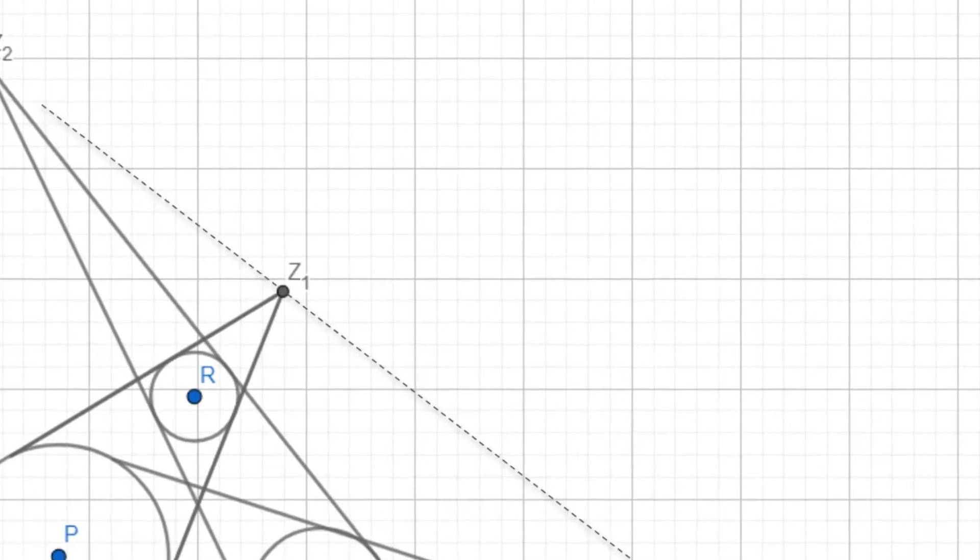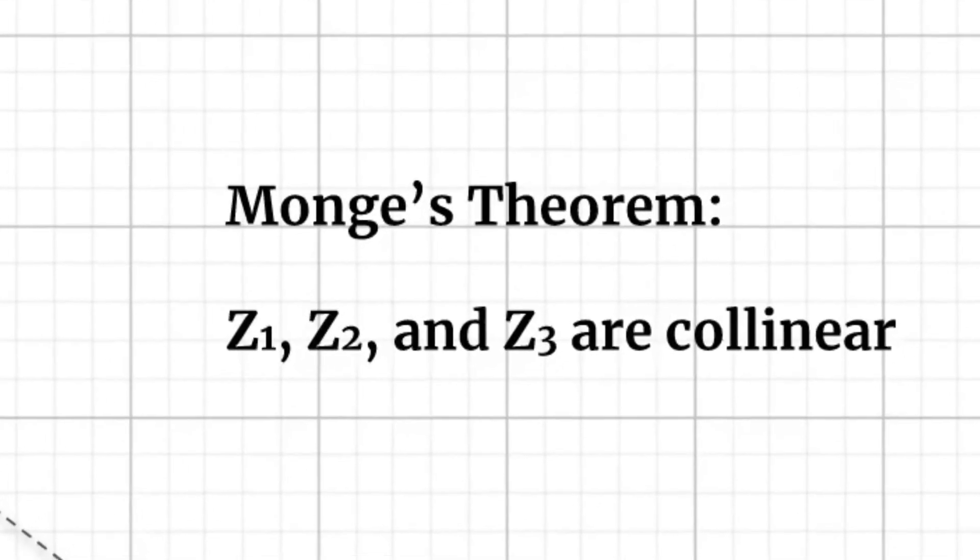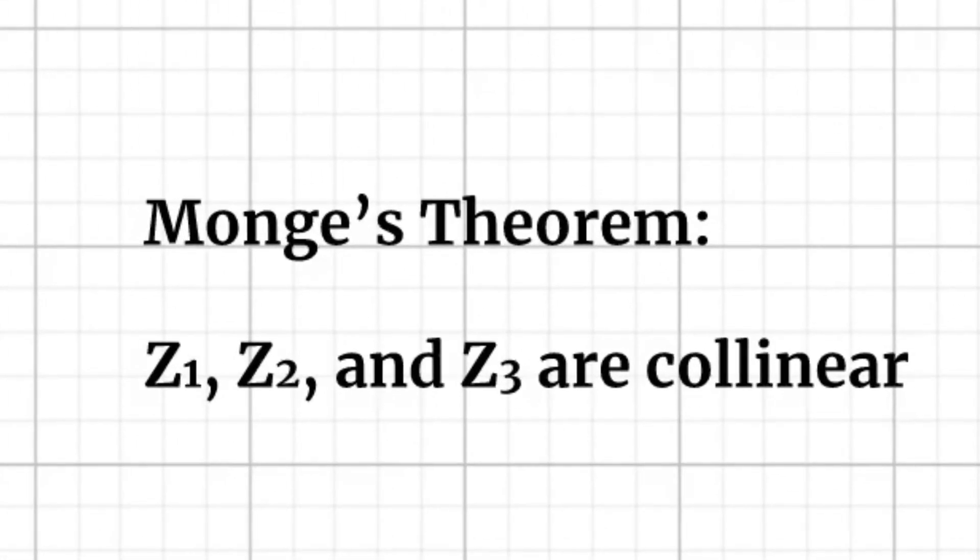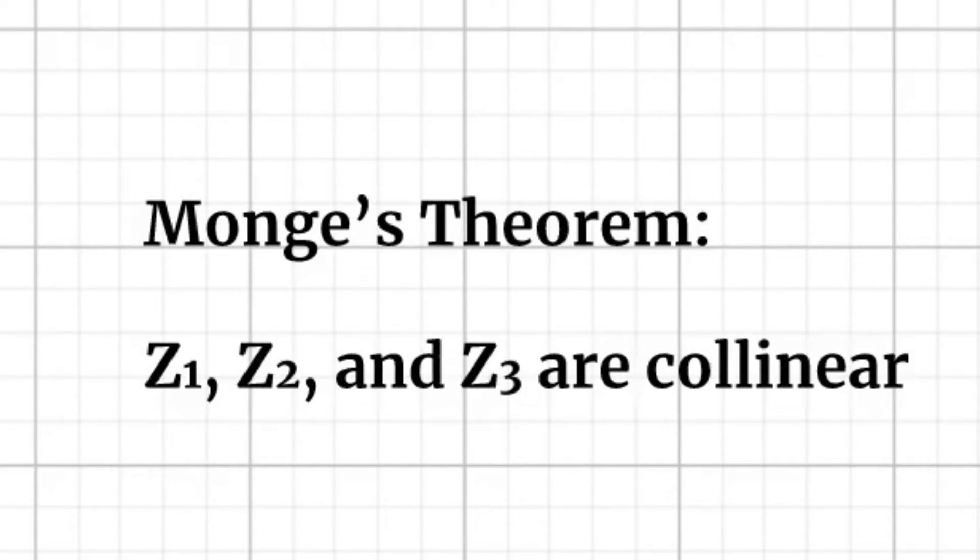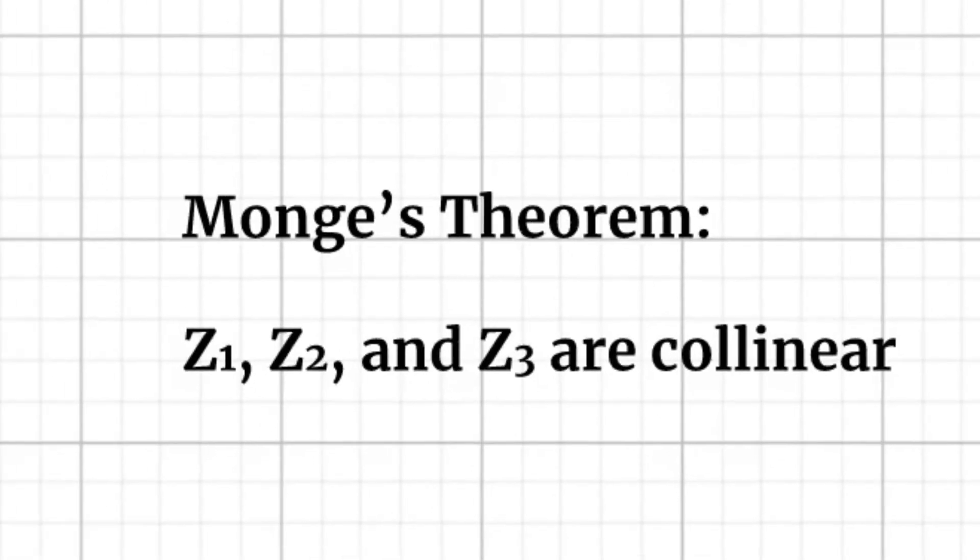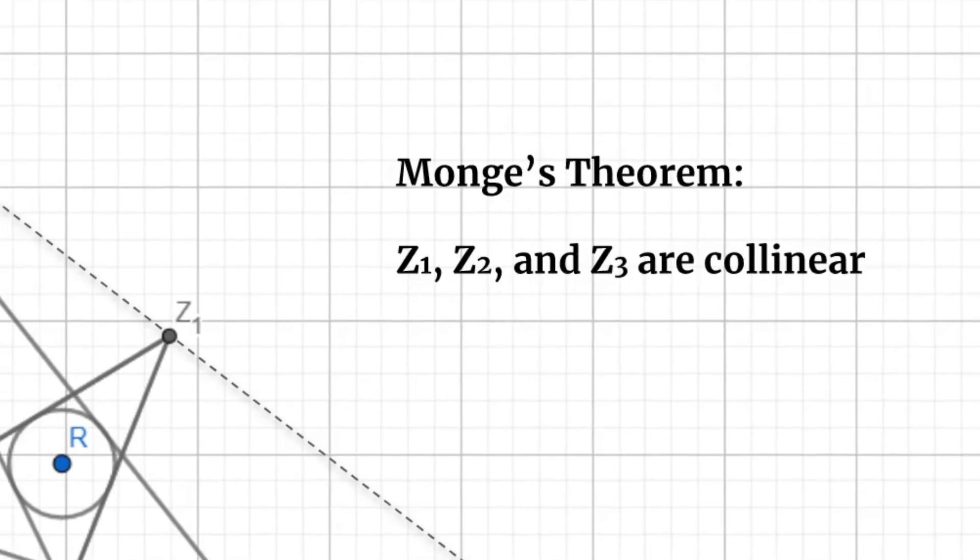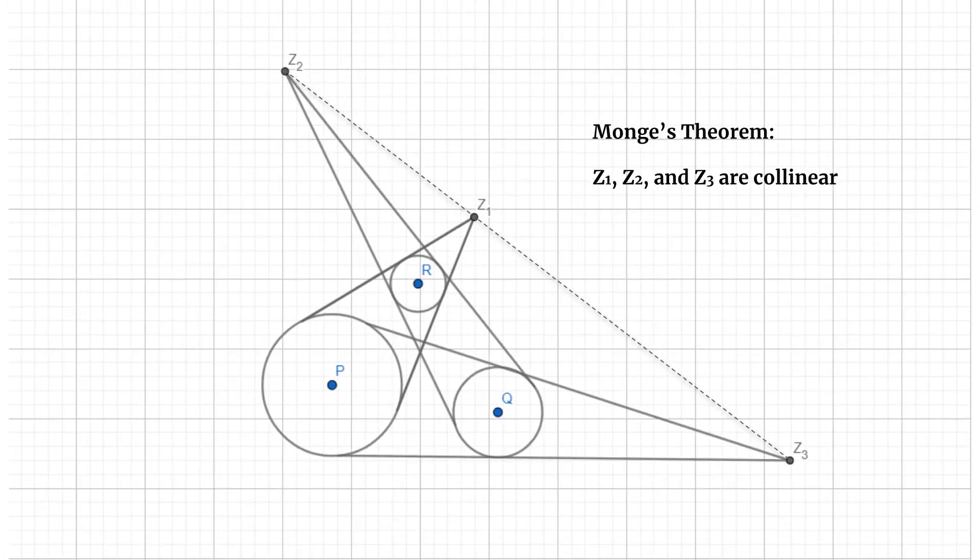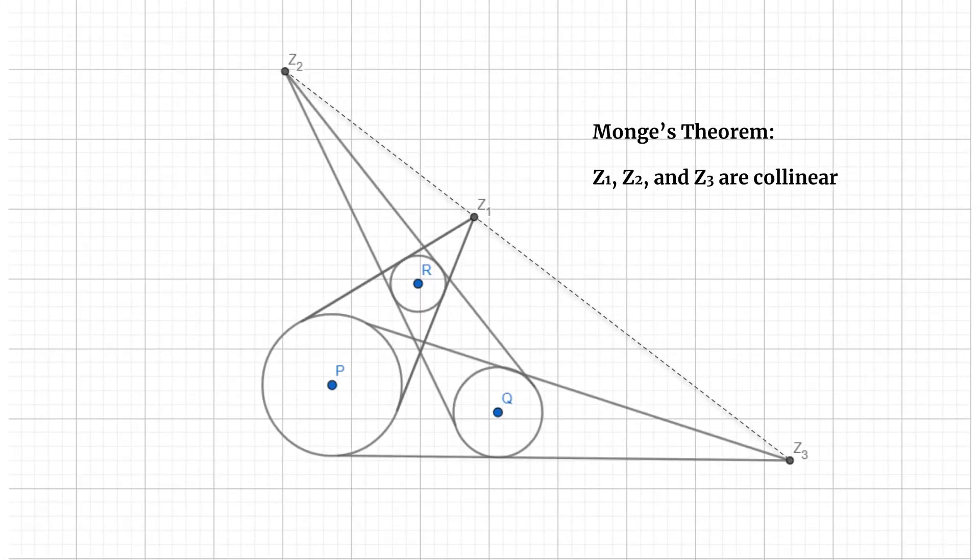Monge's Theorem states that these three outside points are collinear. So how do we go about proving this? Well, we have some expressions for proving collinearity between three points, but we don't know much about Z1, Z2, or Z3 themselves. We try and find ways to express them in terms that we already know, which in this case are the centers and radii of the circles.